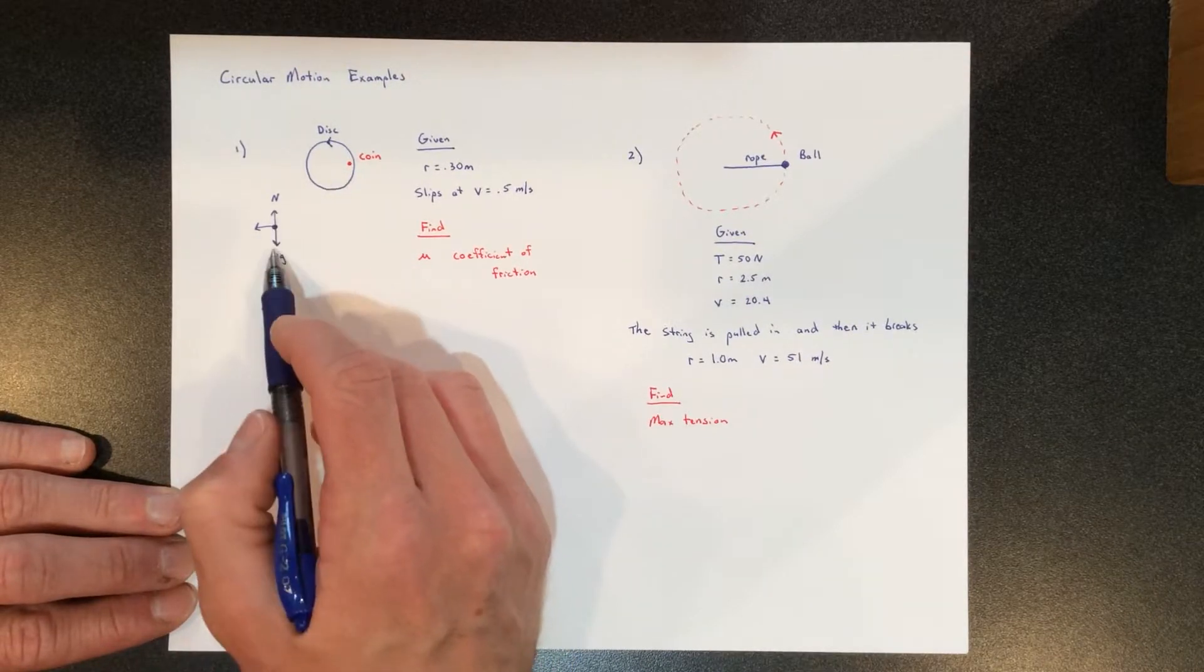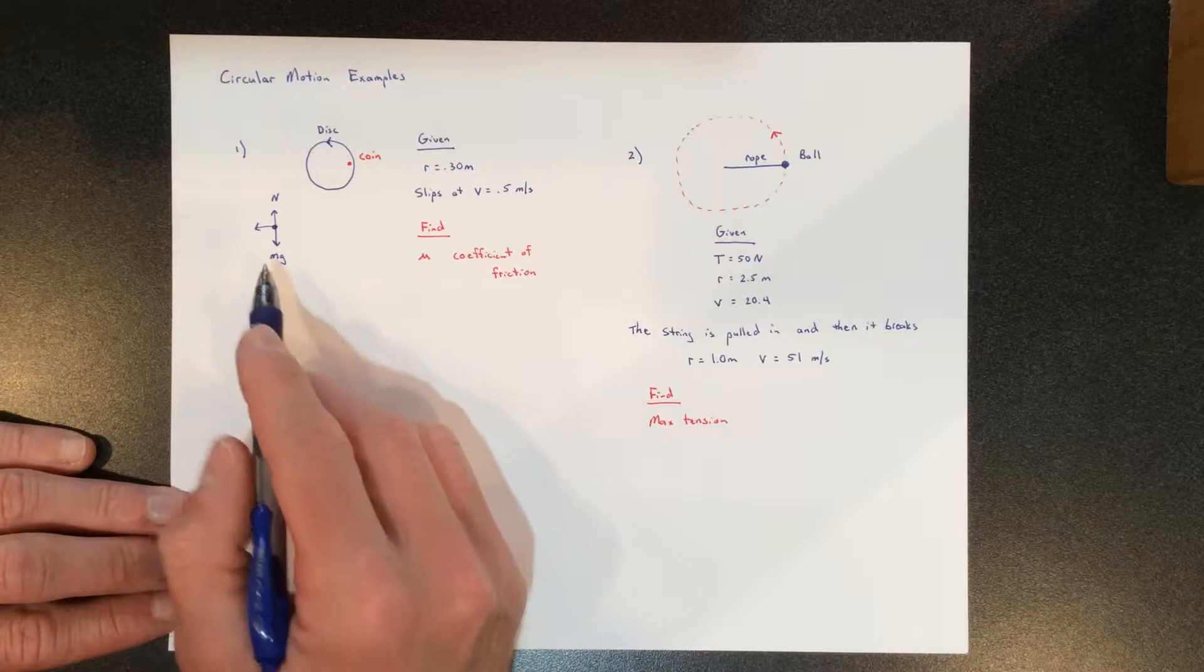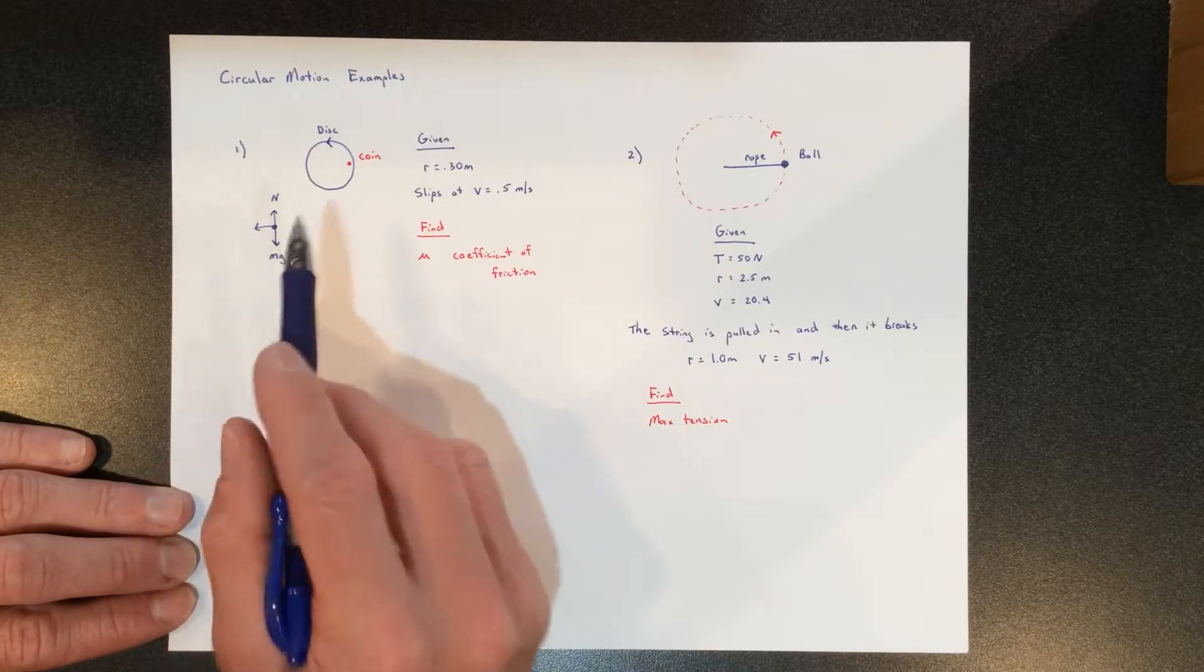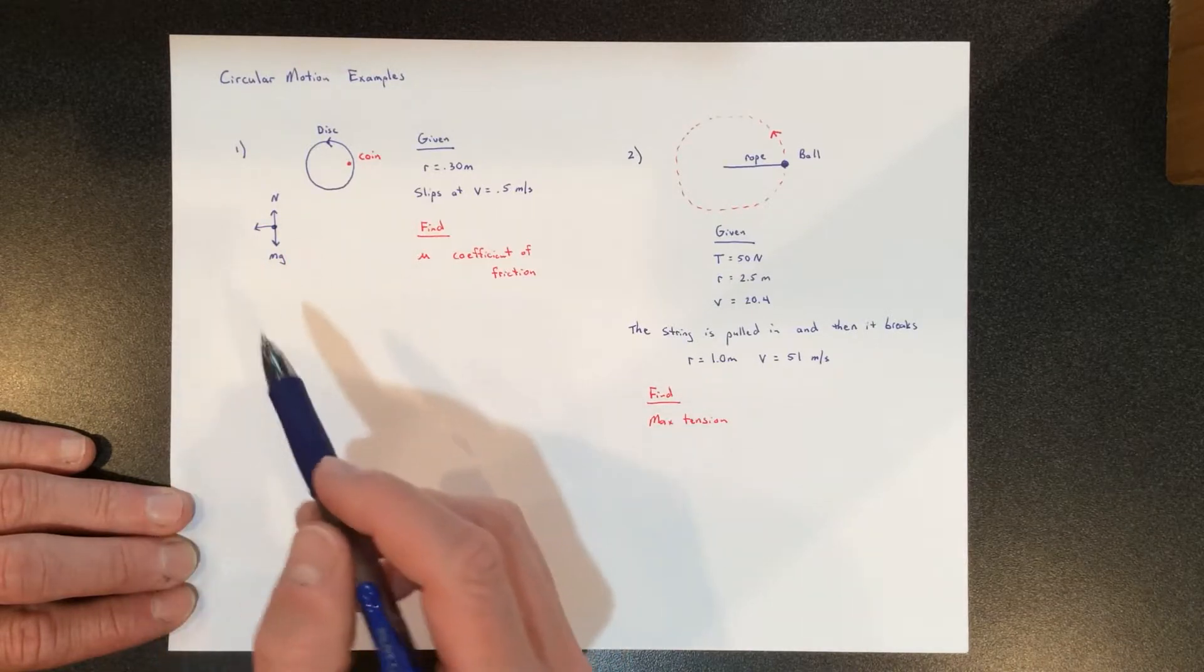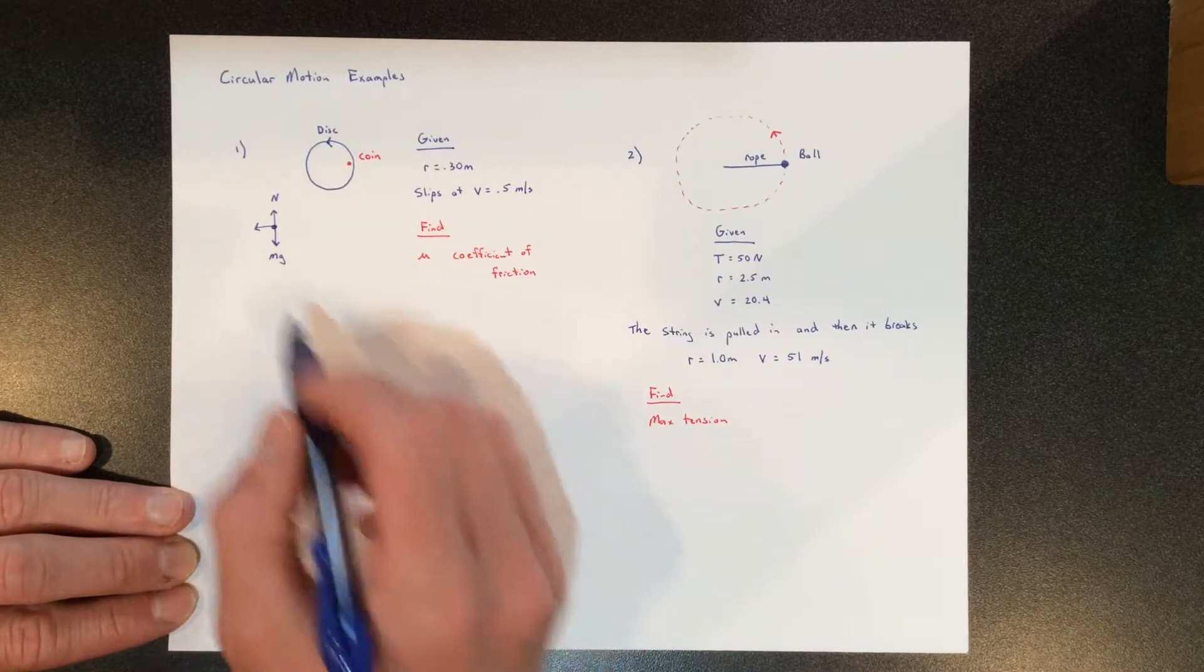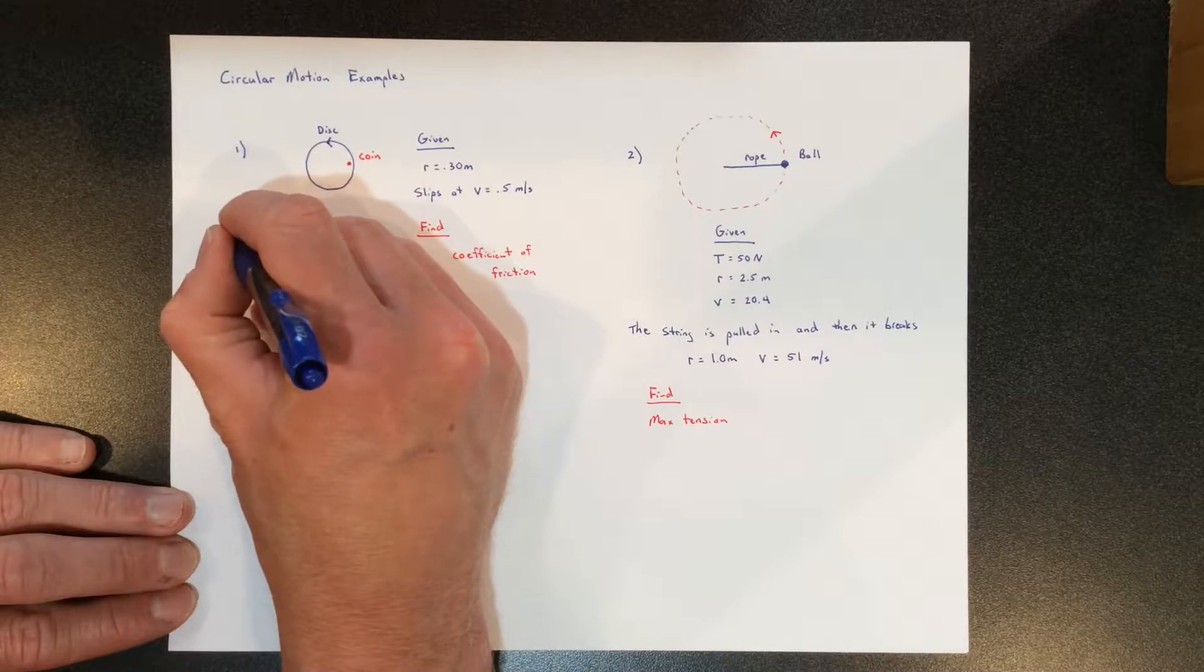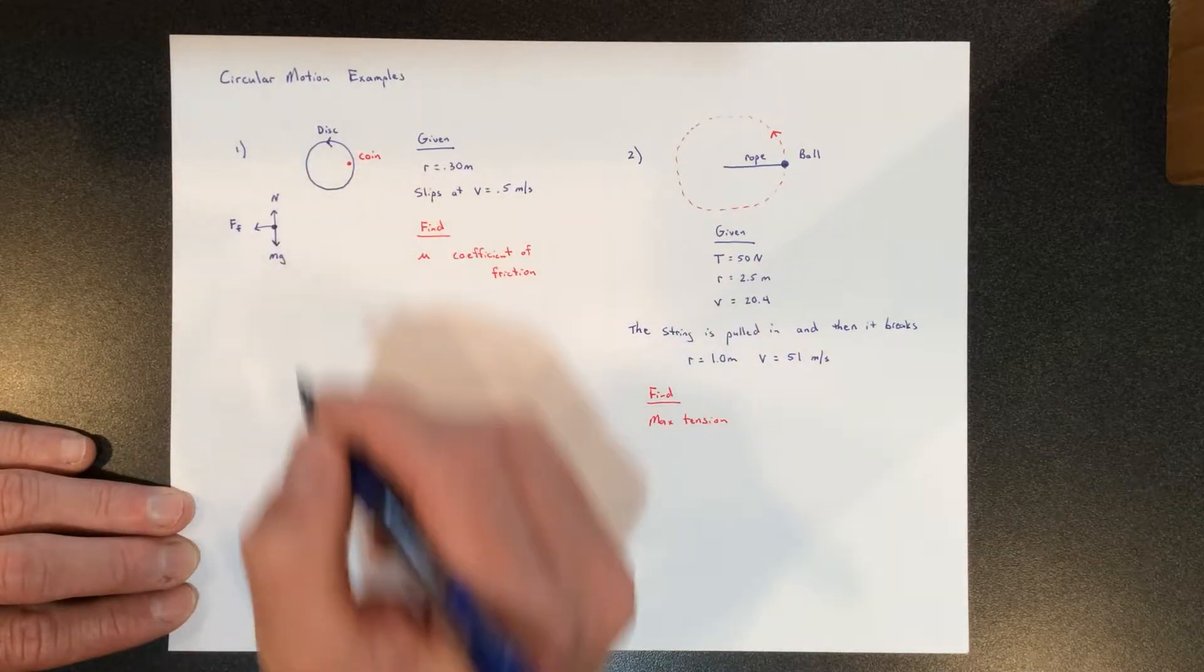Those two things are equal and they're balanced in this case. There's some inward force—remember, to move in a circle you must be forced to move in a circle. Objects don't just move into circles on their own. The force in this case that's causing the circular motion is the force of friction.